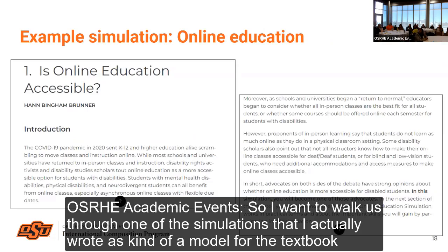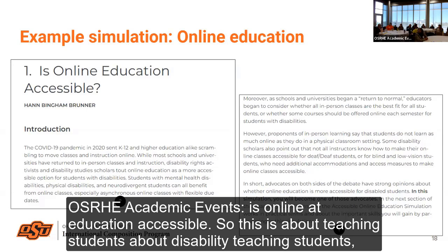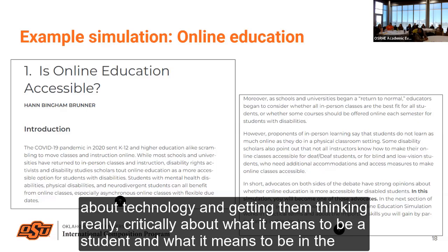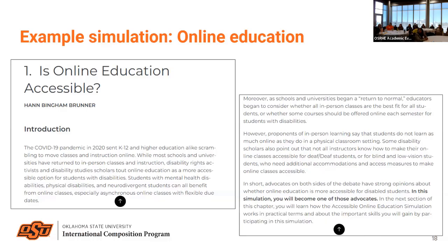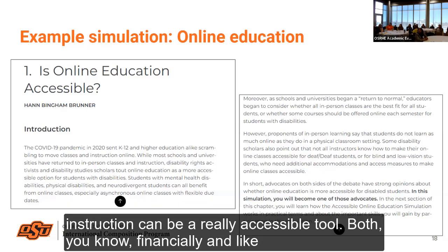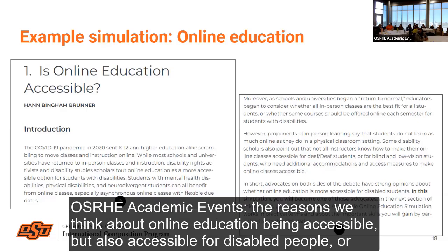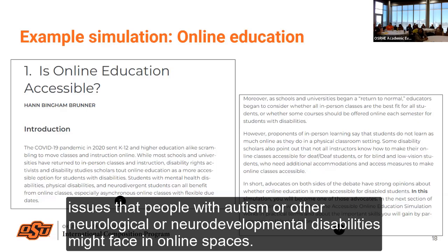I want to walk through one of the simulations as a model for the textbook — this one is about whether online education is accessible. It's about teaching students about disability, teaching students about technology, and getting them thinking critically about what it means to be a student in the classroom today in 2023. Part of it is a debate — whether online instruction can be an accessible tool, both financially and for disabled people: thinking about all the issues that deaf or blind students might face in an online classroom, or issues that people with autism or other neurodevelopmental disabilities might face in online spaces.